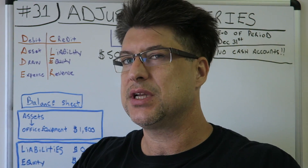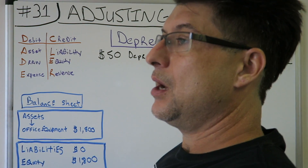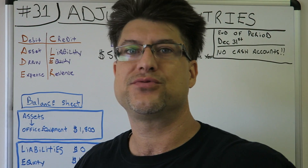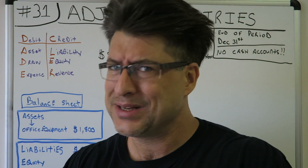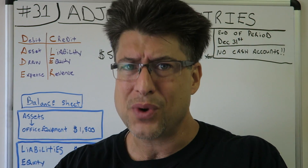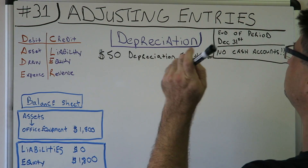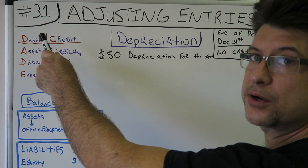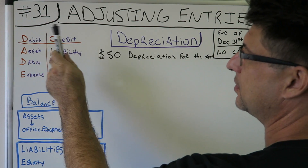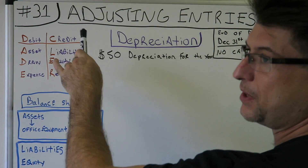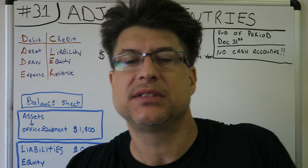We're going to do depreciation — it's one of the five adjusting entries. If you're new here, you'll notice the DC ADE LER system — that's my mapping system: Debit, Credit, Asset, Draw, Expense, Liability, Equity, Revenue. I always put that on my paper. You put that on your paper too — don't be lazy.